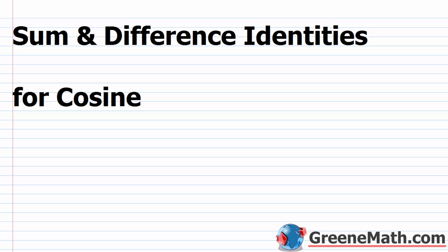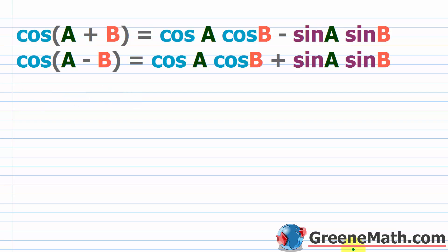In this lesson, we want to talk about the sum and difference identities for cosine. As we continue to work through our chapter on trigonometric identities, we're going to come across the sum and difference identities for cosine.